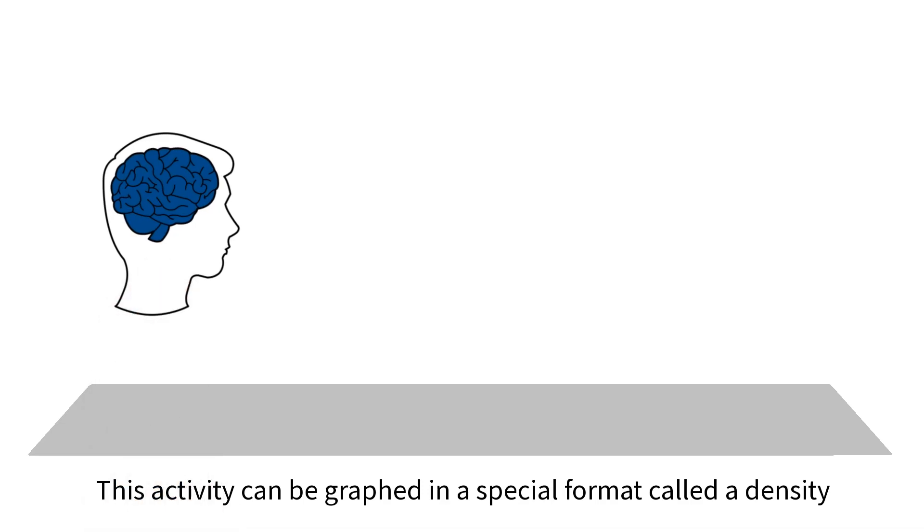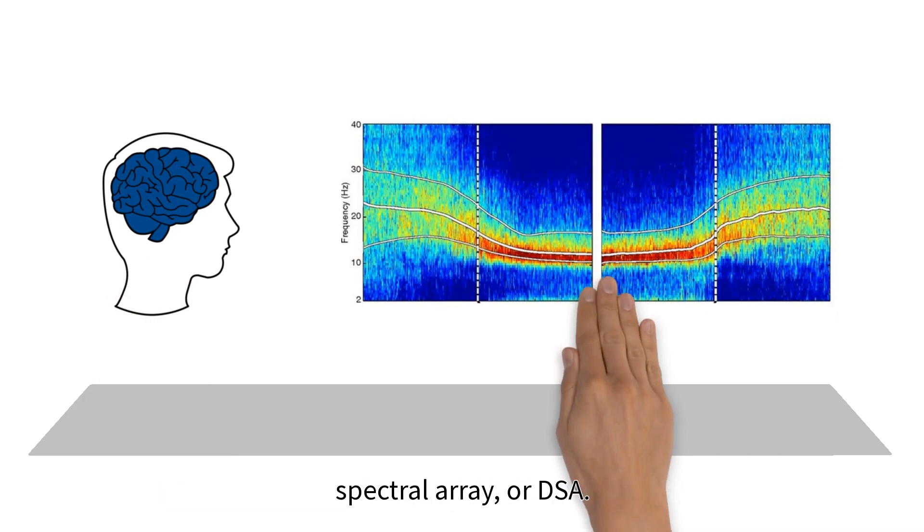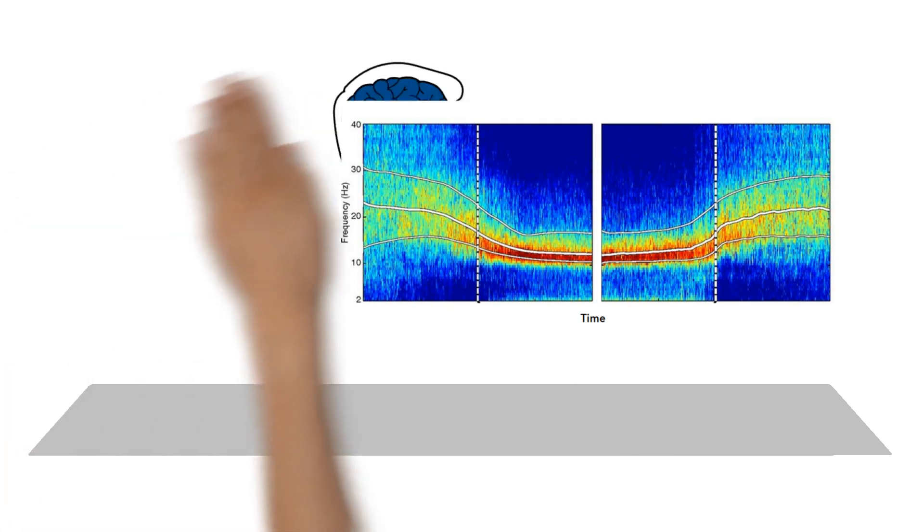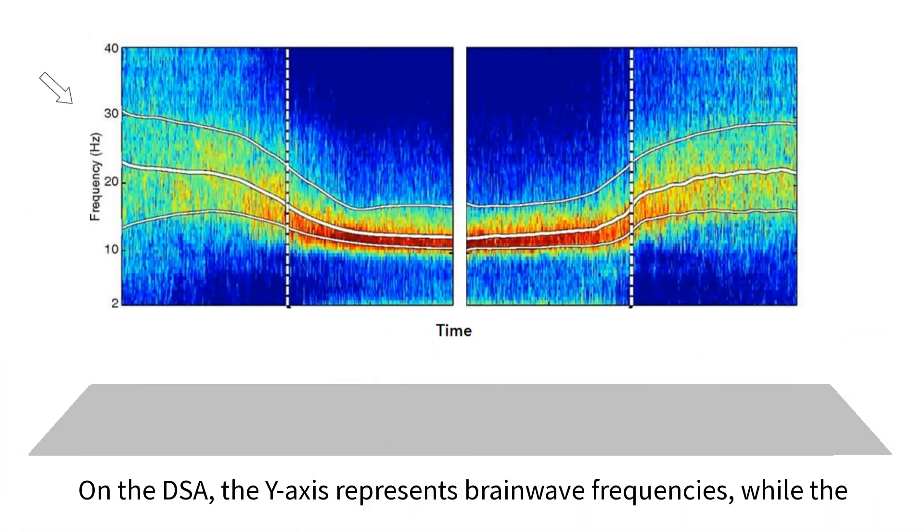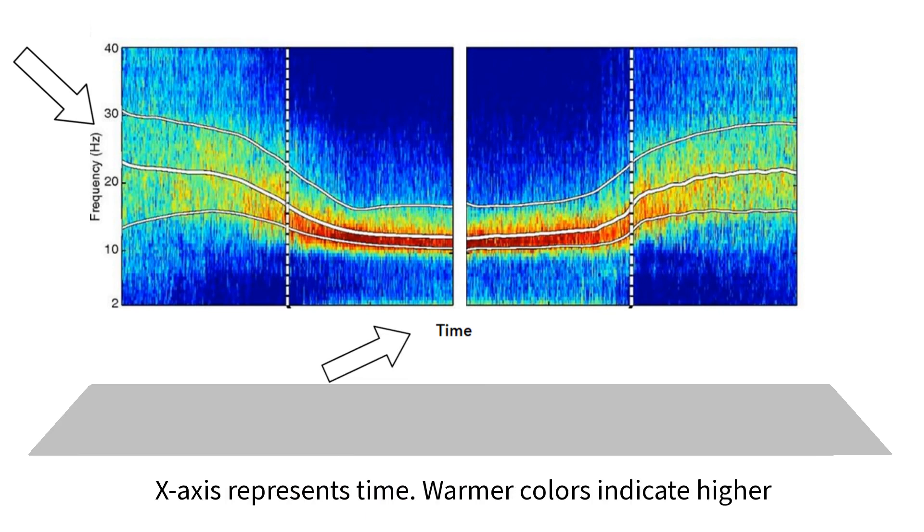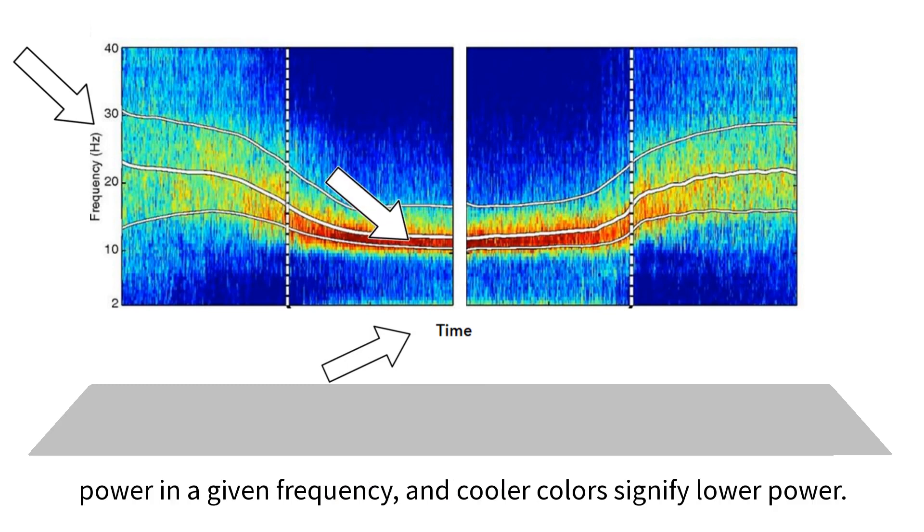This activity can be graphed in a special format called a Density Spectral Array, or DSA. On the DSA, the y-axis represents brainwave frequencies, while the x-axis represents time. Warmer colors indicate higher power in a given frequency, and cooler colors signify lower power.